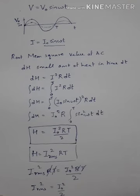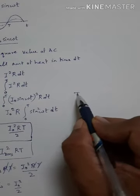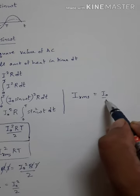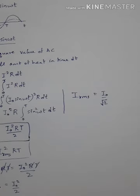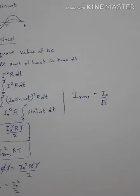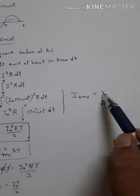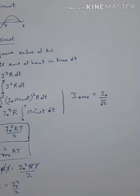So we get I_RMS² = I₀² / 2, which gives us I_RMS = I₀ / √2. This is called the root mean square value of the current, which is a fixed value. In AC, if we want one representative value of current as in DC, we take the RMS value, which is 1/√2 times the maximum value I₀.